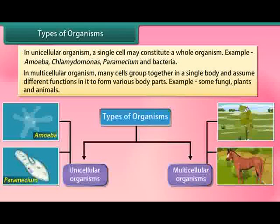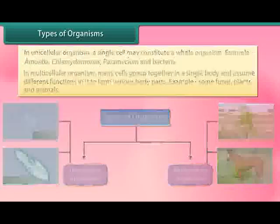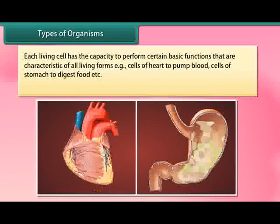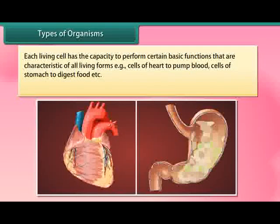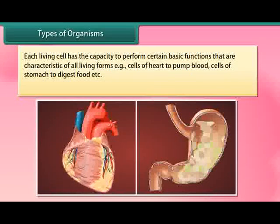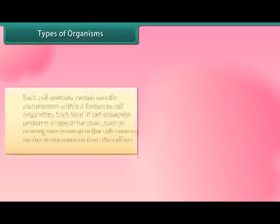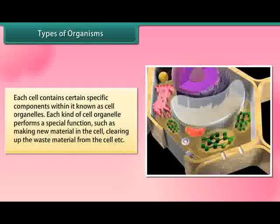In multicellular organisms, many cells group together in a single body and assume different functions to form various body parts. Examples include some fungi, plants, and animals. Each living cell has the capacity to perform certain basic functions — for example, cells of the heart pump blood, cells of the stomach digest food. Each cell contains certain specific components within it, known as cell organelles.